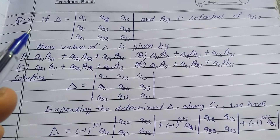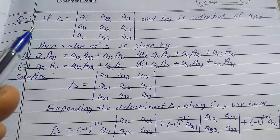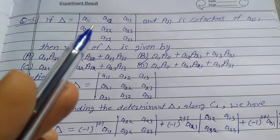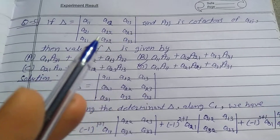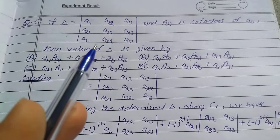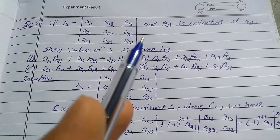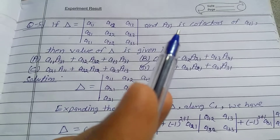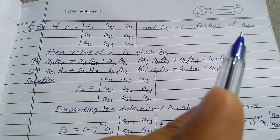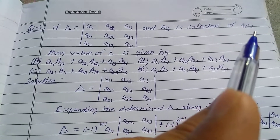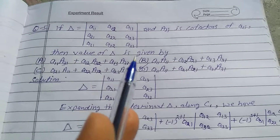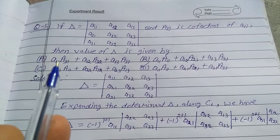Explanation number 5, Exercise 4.4, Class 12. If delta is equal to the determinant with elements a11, a12, a13, a21, a22, a23, a31, a32, a33, and capital A_ij is the cofactor of small a_ij, then the value of delta is given by which of the following options?